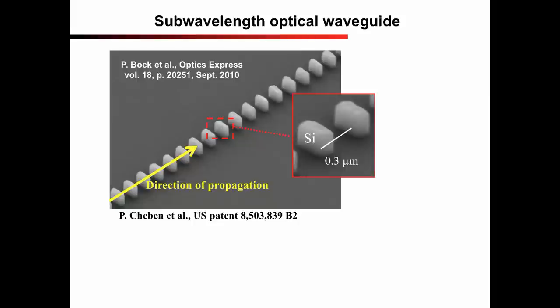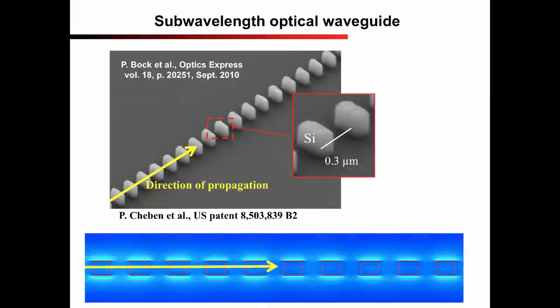The light propagates in such a waveguide in the form of so-called Floquet-Bloch mode, kind of hopping from one segment to another. Yes, it is the same principle well-known in solid-state physics as in the propagation of electrons in crystals.